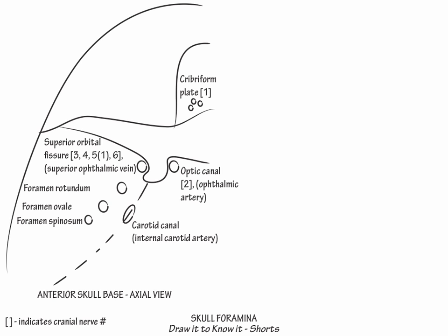Indicate that the second division of cranial nerve 5 traverses foramen rotundum. Then show that the third division of cranial nerve 5 traverses foramen ovale. However, show that the meningeal branch of this nerve passes through foramen spinosum along with the middle meningeal artery. Injury to the middle meningeal artery is the major cause of epidural hematoma.